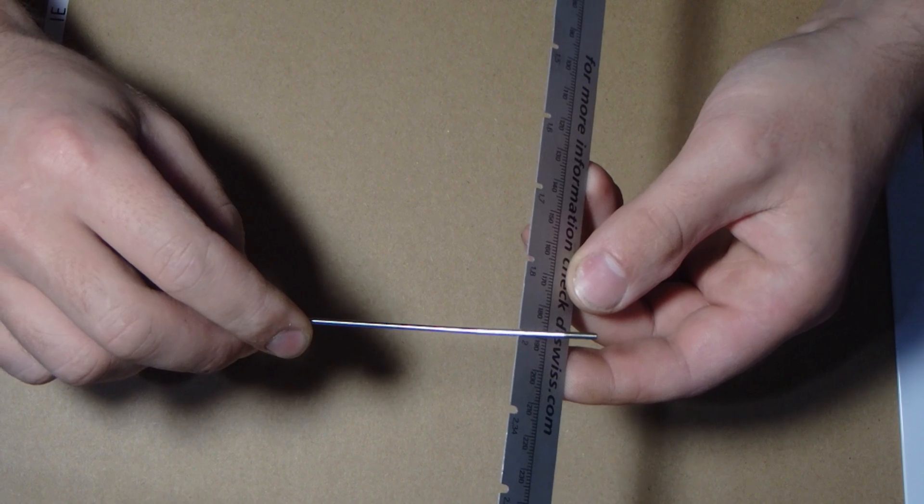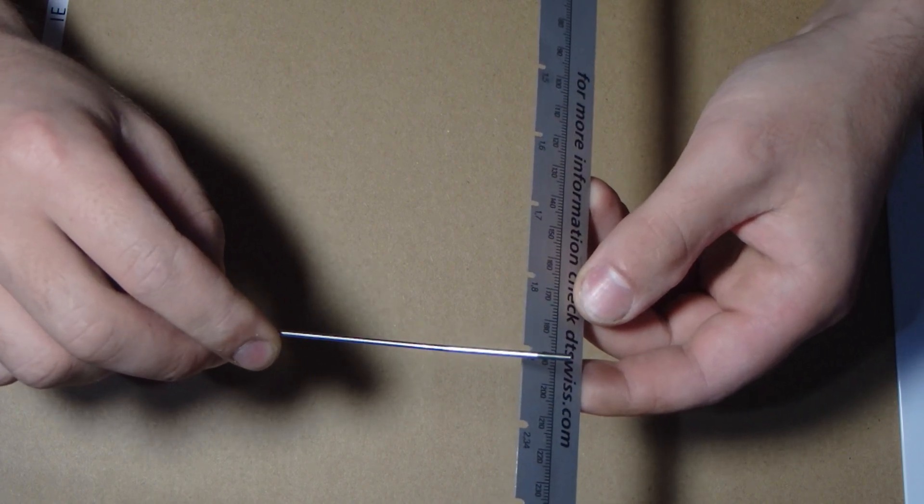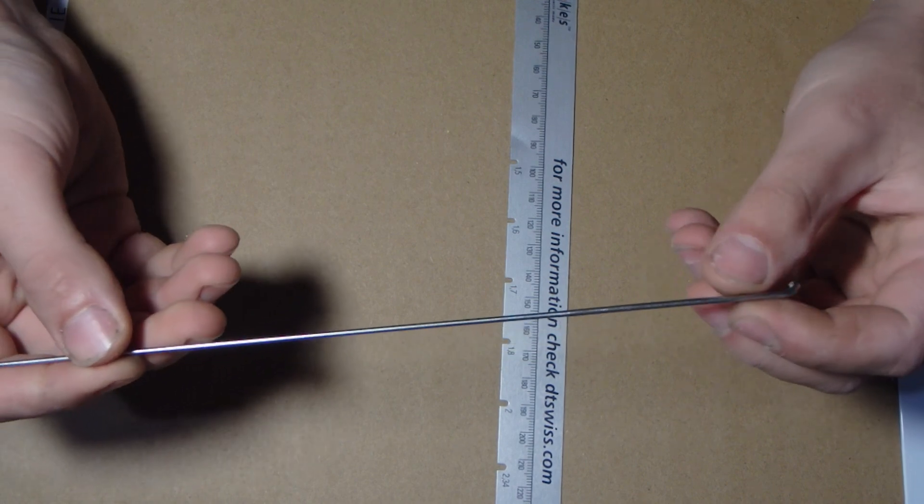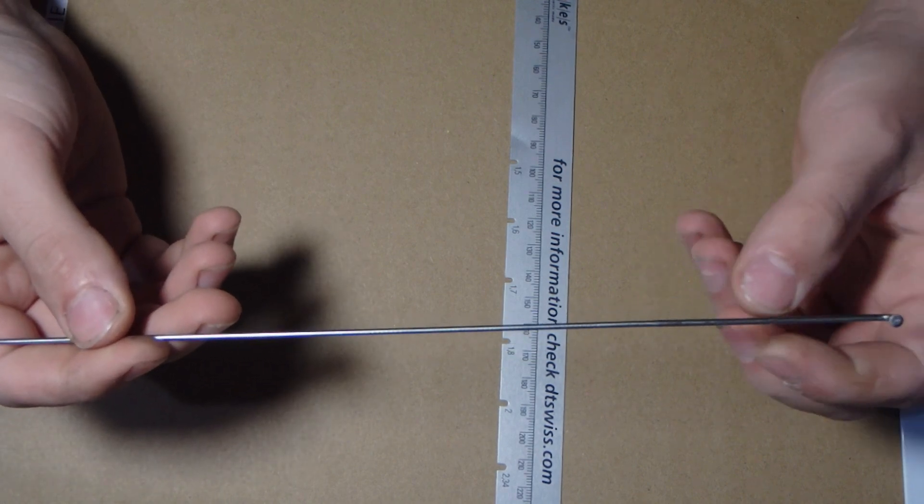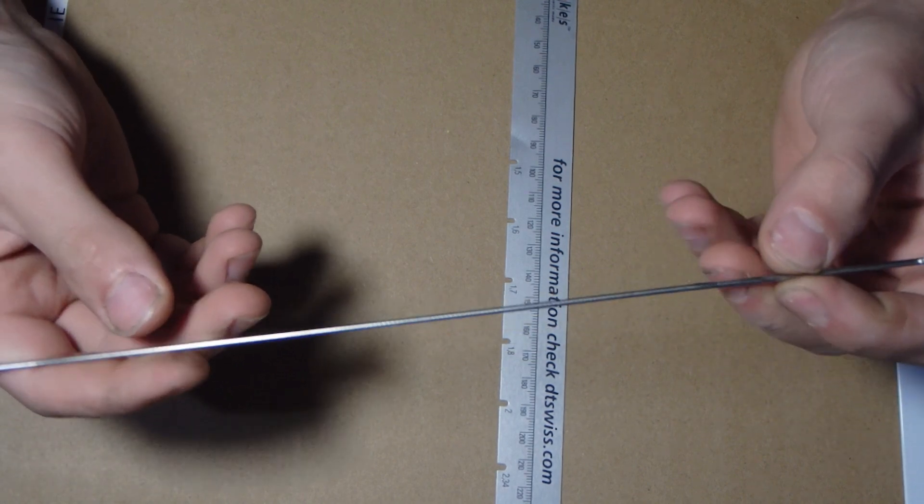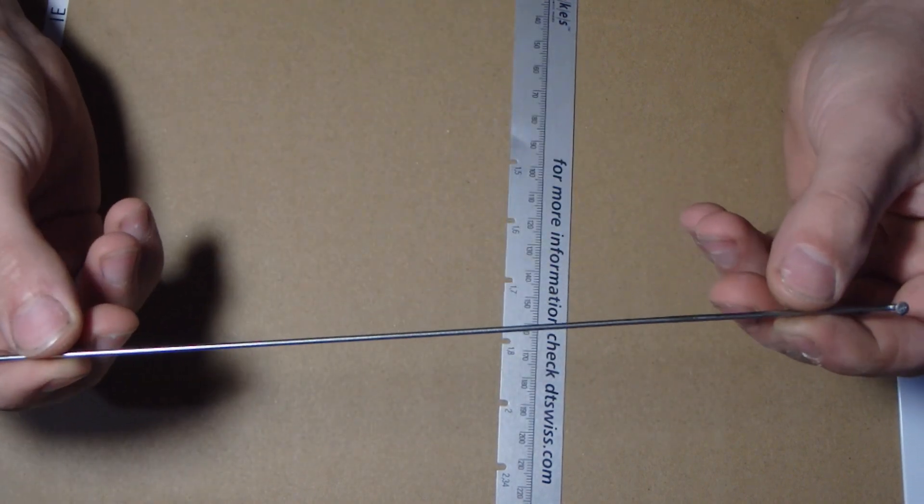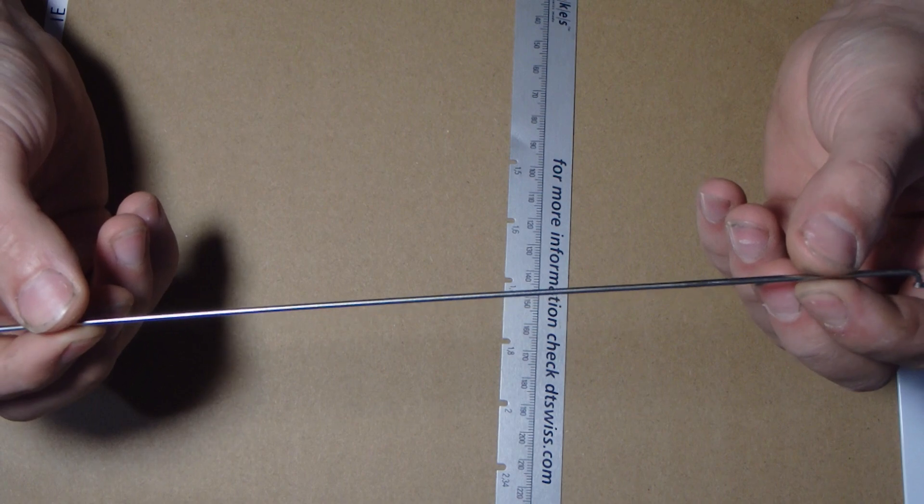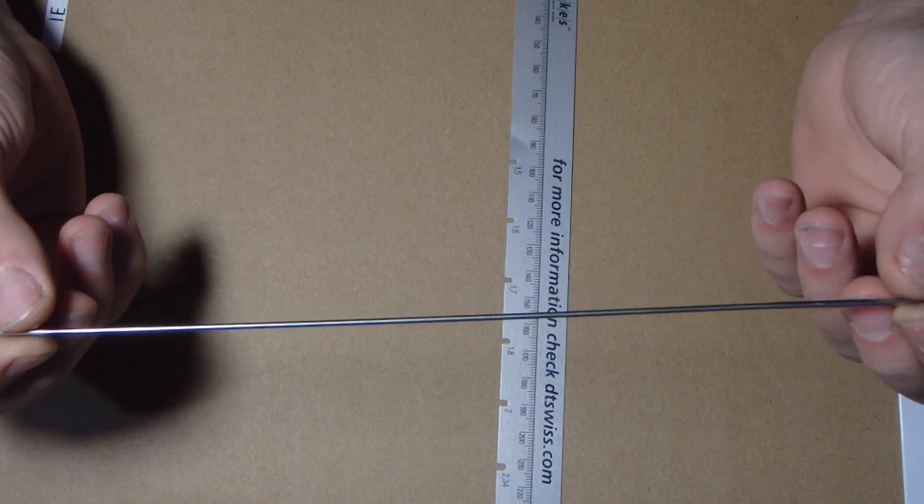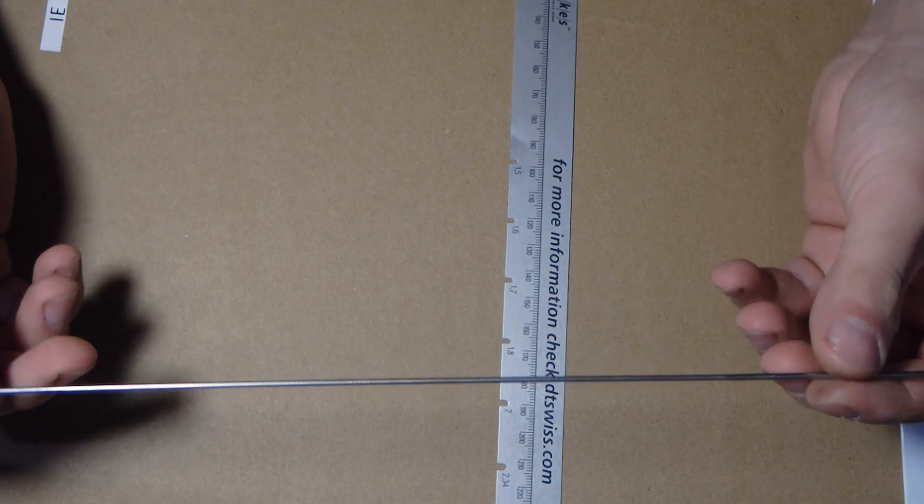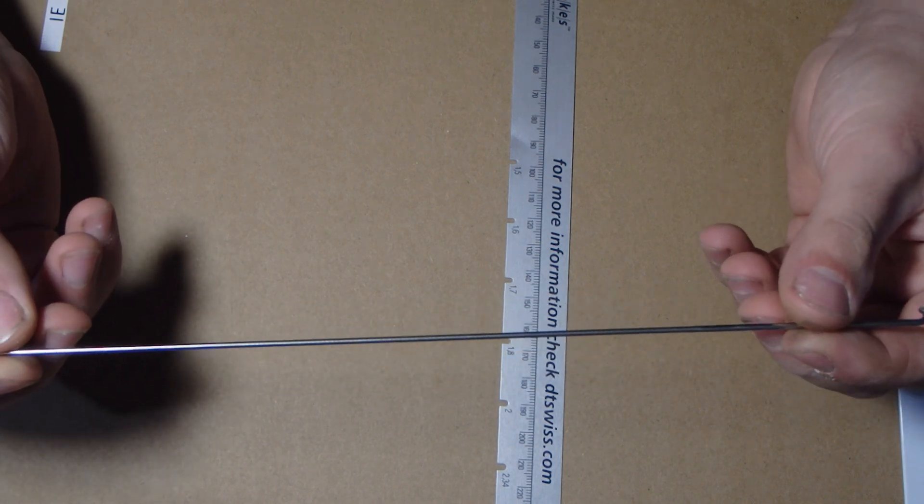So this particular spoke is 302 millimeters long. It goes from 2mm to 1.8 back to 2, and that's what we'll expect because this is a DT competition spoke and that's what the design specs on this particular spoke are. So it all checks out, it's ready to use.